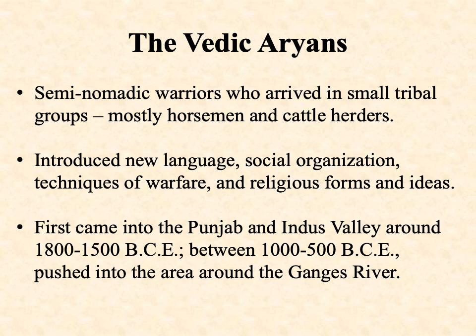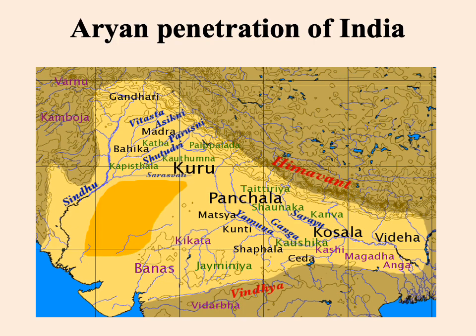They first came into the Punjab and Indus Valley around 1800 to 1500 BCE, roughly corresponding to where the Indus River Valley civilization had existed prior. After that, between 1500 BCE onward, they penetrated more deeply into the rest of northern India, pushing down the Ganges River. This map gives a pretty good idea of the manner of Aryan penetration of India — you can make out the Ganges River moving down from the Himalayas in a southeastern direction until it hits the Indian Ocean.